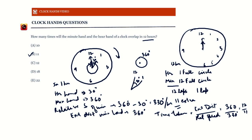360 divided by 330 equals 12/11. So in every 12/11 hours, the minute hand covers 360 degrees more than the hour hand — meaning it takes 12/11 hours for the minute hand to meet the hour hand once. In a total period of 12 hours, they meet 12 ÷ (12/11) = 11 times.